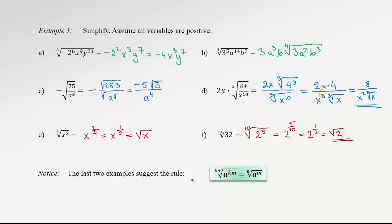Notice that the last two examples suggest the following rule. In the first case we had index 4 and exponent 2 — we reduced both by 2 and ended up with index 2 and exponent 1, giving 1 half. Similarly, we had index 10 and exponent 5, reduced both, and ended up with index 2 and exponent 1. So generally, if the index of the radical and the exponent of the radicand share a common factor k, we can reduce and end up with the nth degree radical of a to the m only.